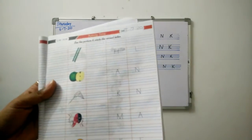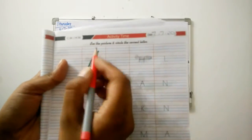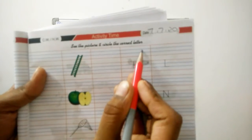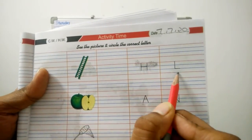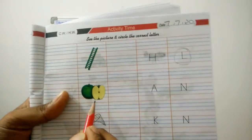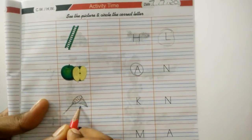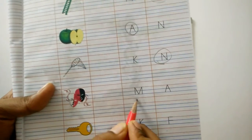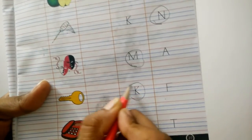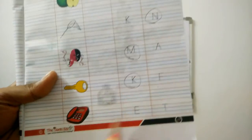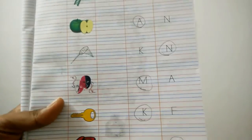Now page number 27. See the picture and circle the correct letter. Look at the picture and put a circle on the correct letter. A for apple. N for net. M for mask. K for key. T for telephone. Complete the whole page.